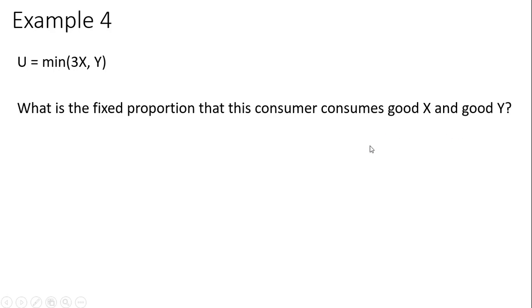So, setting 3X equal to Y, constructing a ratio of good X to good Y, it's going to be one-third. So, that's the fixed proportion that the consumer is consuming these goods in. And, in other words, the consumer uses one unit of X for every three units of Y.